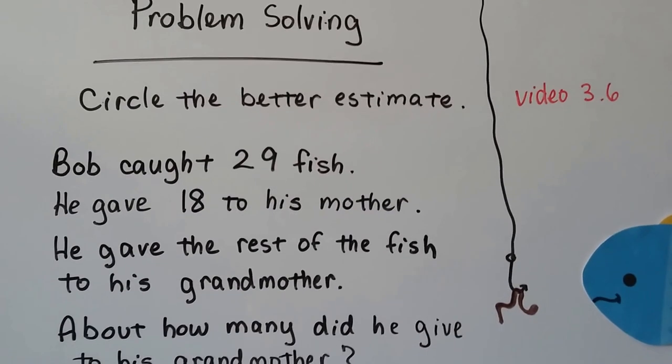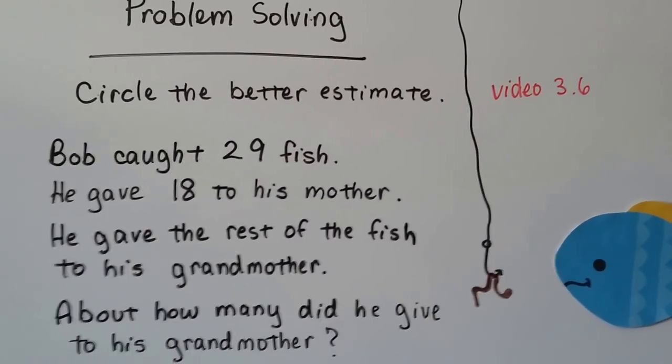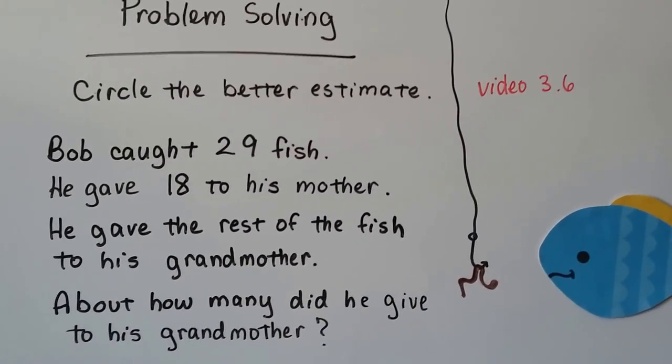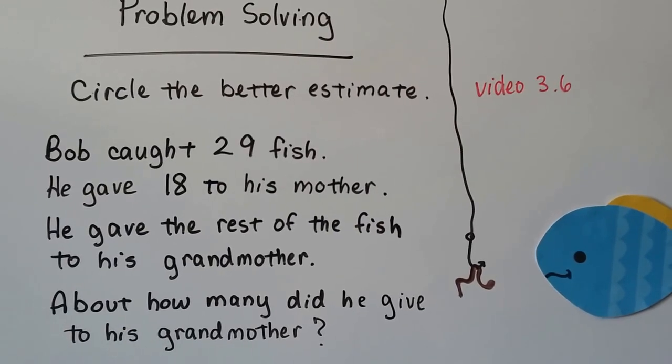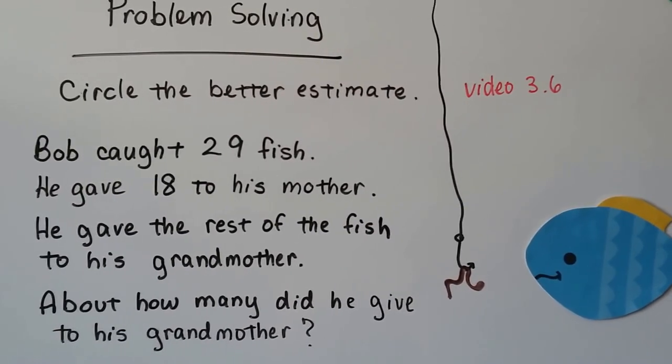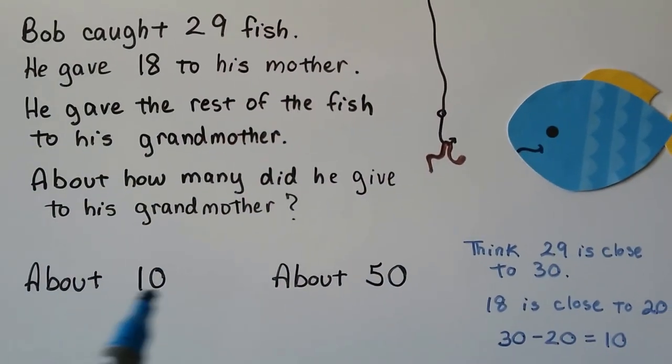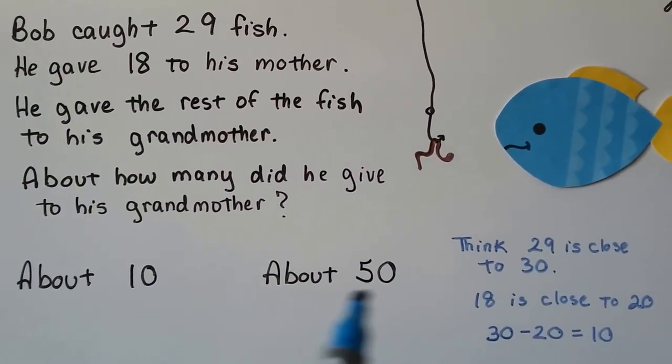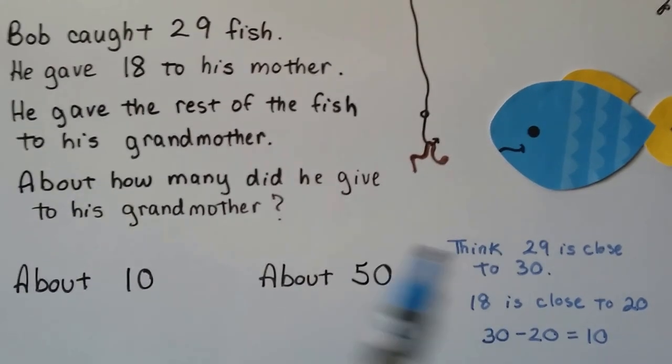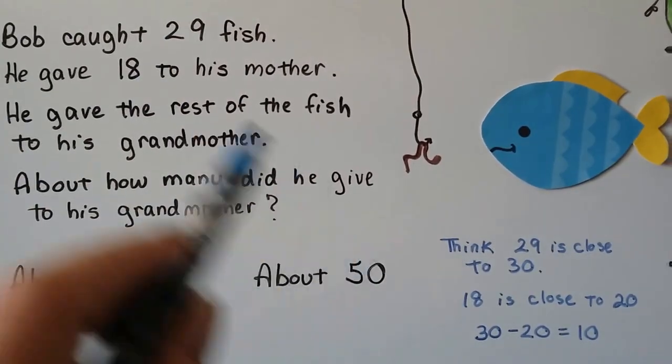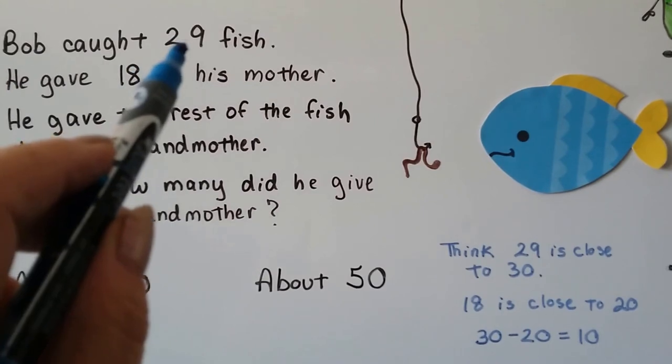Bob caught 29 fish. He gave 18 to his mother, and he gave the rest of the fish to his grandmother. About how many did he give to his grandmother? So we think, is it going to be about 10 or about 50? We think that 29 is very close to 30, isn't it? That's the next number, 30.